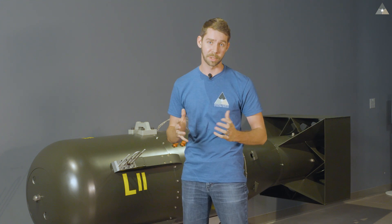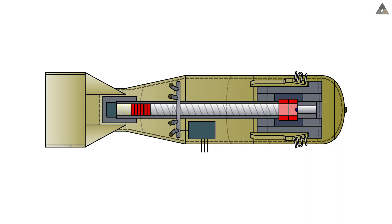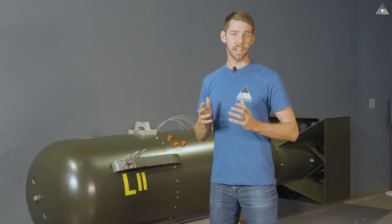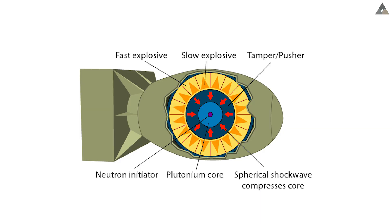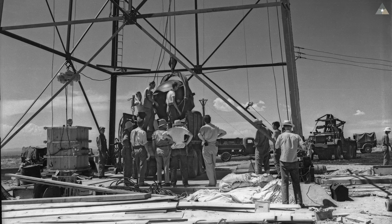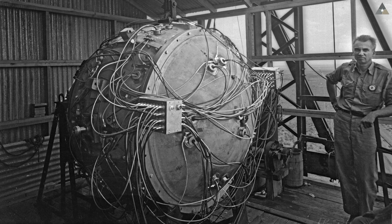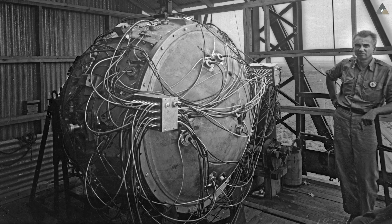The first would be this type here. This is what we call a gun-type device, and it's called this because there's a rather large rudimentary gun on the inside of this weapon. The second kind of nuclear weapon developed during the war was an implosion-style device. This implosion-style bomb, call sign Gadget, would be the first nuclear bomb tested at the Trinity site on July 16th, 1945.